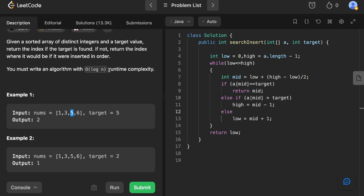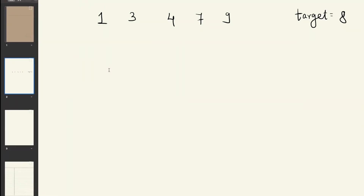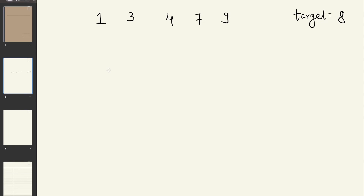This question employs one of the famous observations of binary search, which we'll see through an example. Let's take a sorted array [1, 3, 4, 7, 9] and say we want to find target value 8. As you can see, 8 is not present in the array. Let's apply a standard binary search on this array and see what we get.